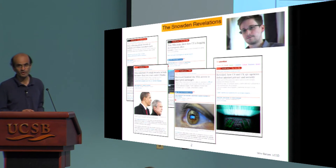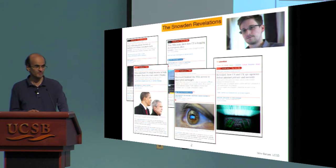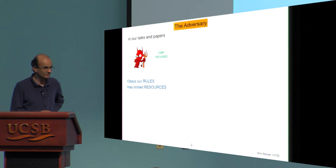The backdrop for all this for us was the Snowden revelations a few years back, which showed large government programs aimed at compromising privacy. For us, it led us to rethink what adversaries should look like.